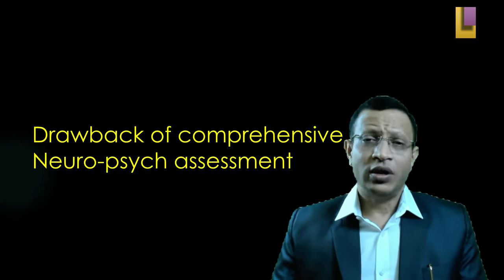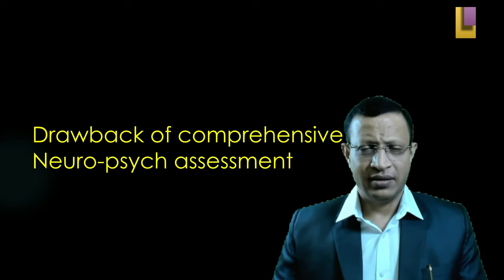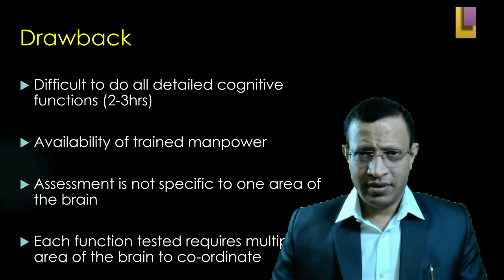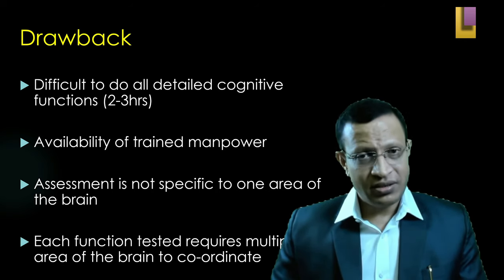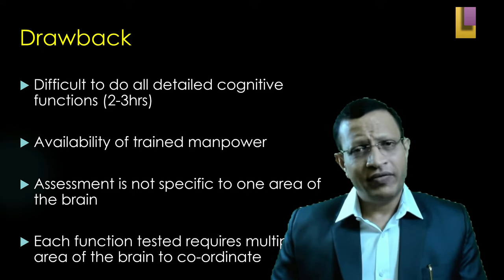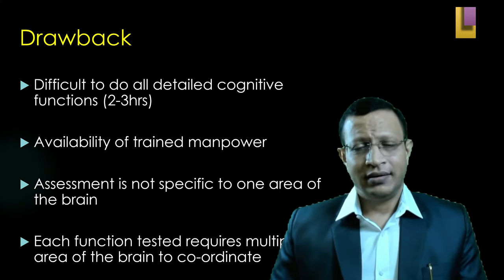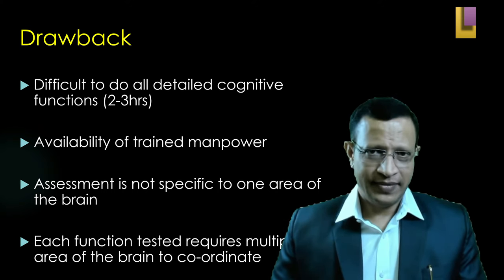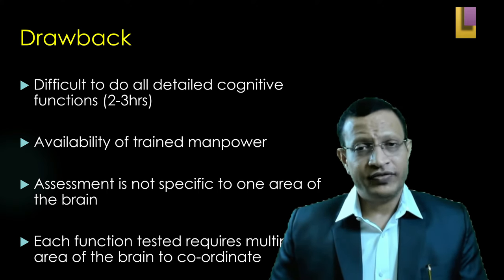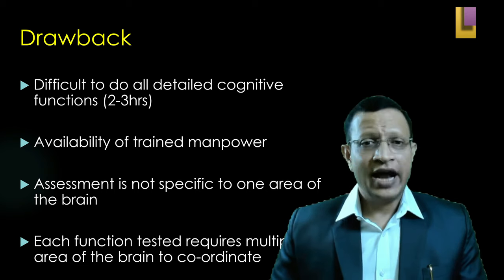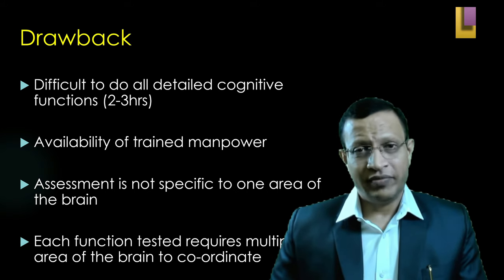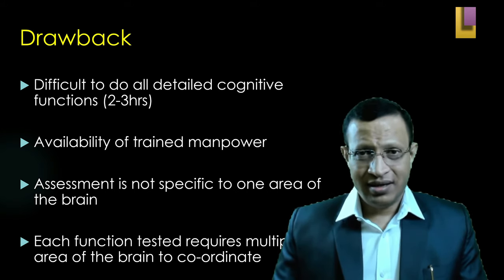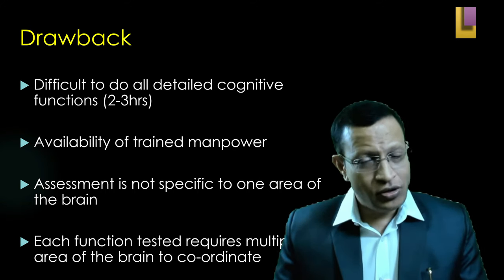Now let us understand the drawbacks of comprehensive neuropsych assessment compared to bedside. Comprehensive assessment requires 2-3 hours in general, and for a detailed assessment it may last 3-5 hours depending upon the patient's motivation or illness. Availability of trained manpower — that is, clinical neuropsychologists — is very limited. Also, assessment done in one specific area of the brain may not depict the whole picture, and each function tested requires multiple assessments, possibly over a period of time.